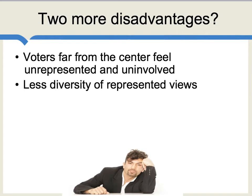Two more potential disadvantages of democracy: first, voters from the center often feel unrepresented or uninvolved, because it's the center that's winning all the time. That doesn't have to be a bad thing, but it's often believed that a parliament or congress would be better with more diversity of represented views. Toward that end, a lot of democracies have moved to a form called proportional representation, which is different from winner-takes-all.